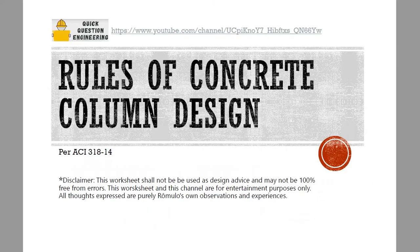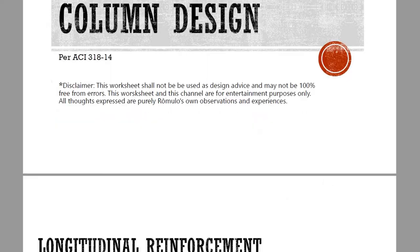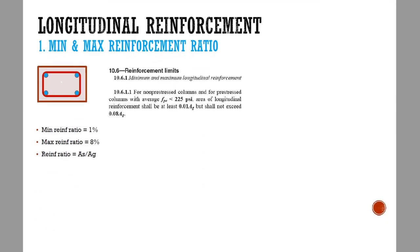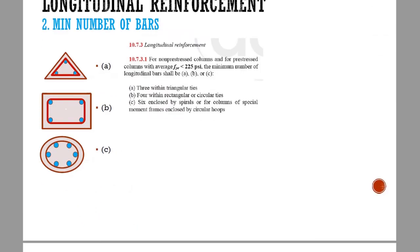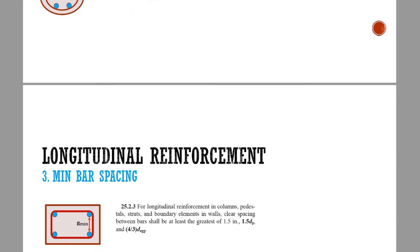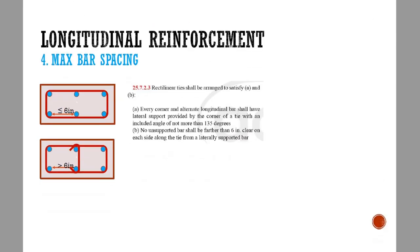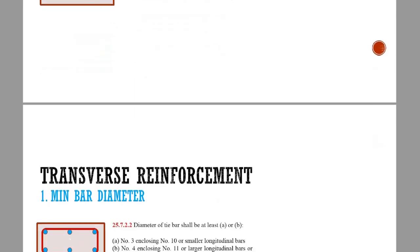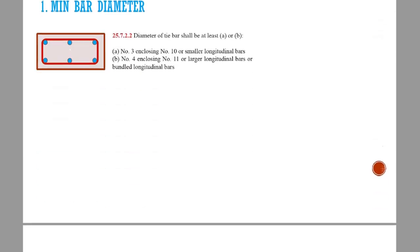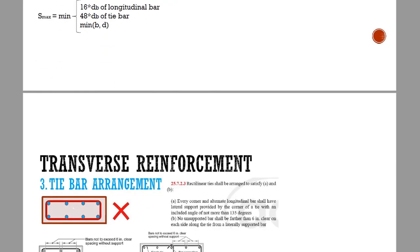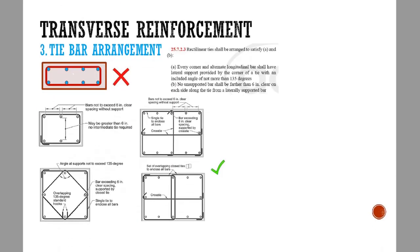I created this PDF with the longitudinal and transverse rules from ACI 318-14, where I grab each code section and have a little visual of what those rules are. If you want to download this free PDF, head over to the description below and click on the link that I provided.